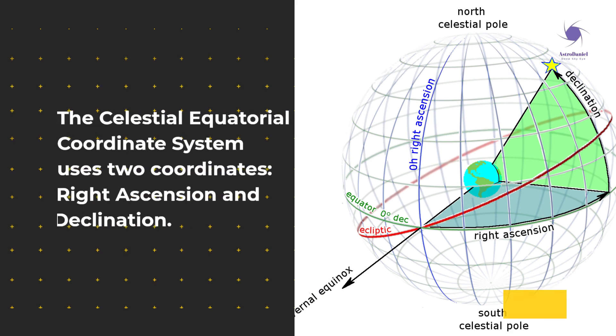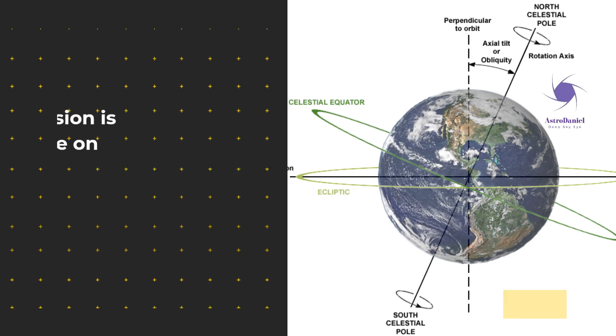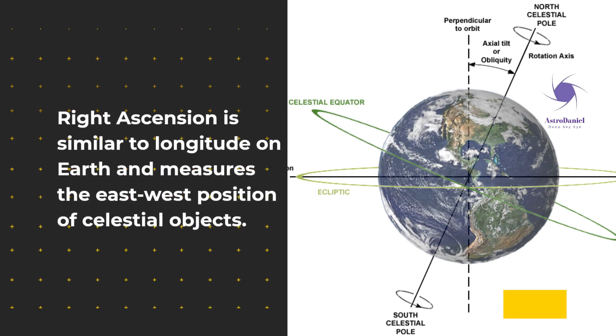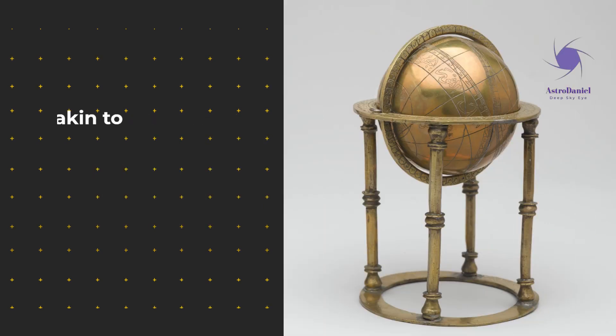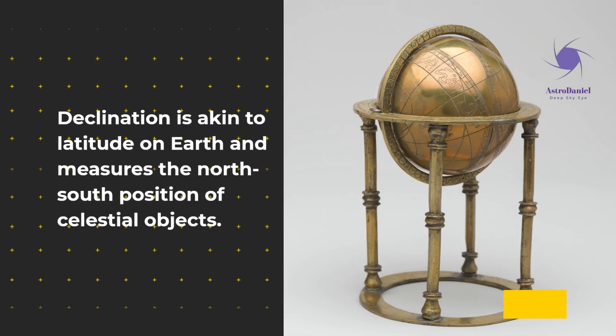The celestial equatorial coordinate system uses two coordinates: right ascension and declination. Right ascension is similar to longitude on Earth and measures the east-west position of celestial objects. Declination is akin to latitude on Earth and measures the north-south position of celestial objects.